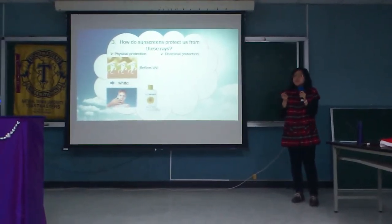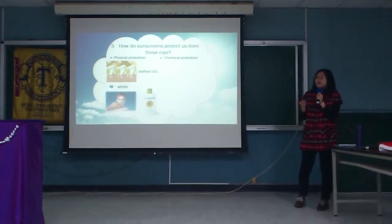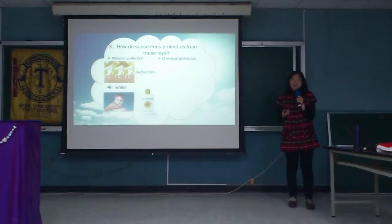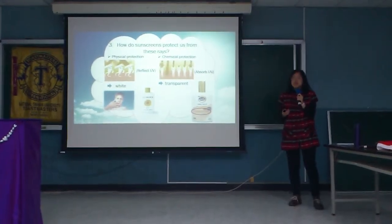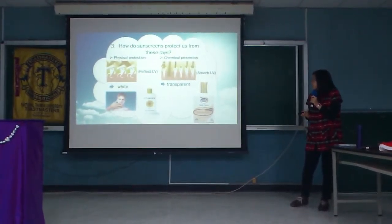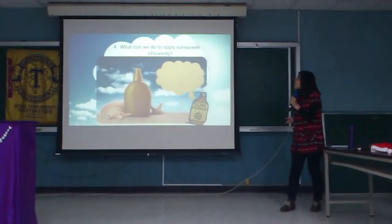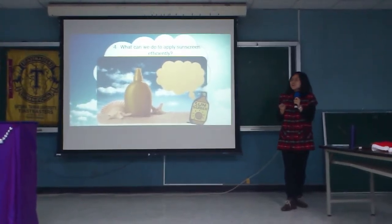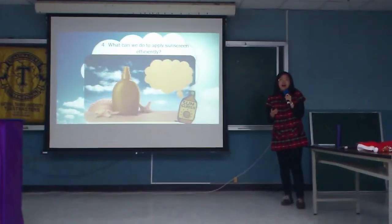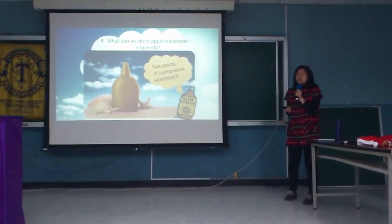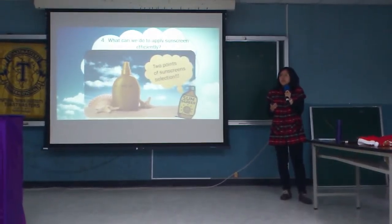So how do sunscreens protect us from these rays? There are two best types: the physical and the chemical protection. The principle of physical protection is that it reflects the sun rays on its surface. When we apply it, it sits visibly on the skin. On the other hand, chemical sunscreen absorbs the UV rays and is transparent on the skin.